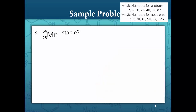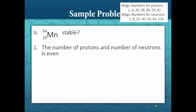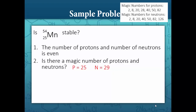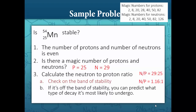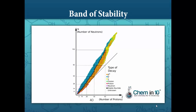Is manganese-54 stable? We first check if the number of protons and neutrons are even. Manganese has 25 protons and 29 neutrons — both odd — and neither is a magic number. The neutron-to-proton ratio is 29 to 25, which is about 1.16 to 1. Looking on the band of stability, it seems that the ratio of 29 neutrons to 25 protons is indeed stable.